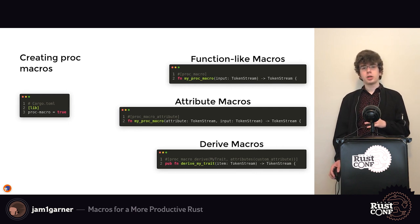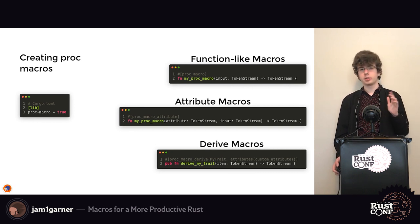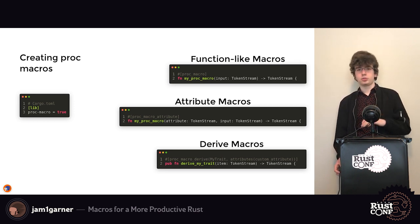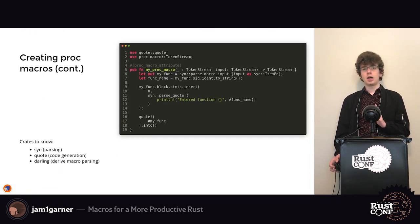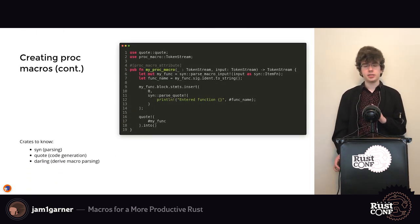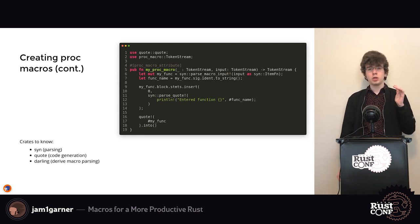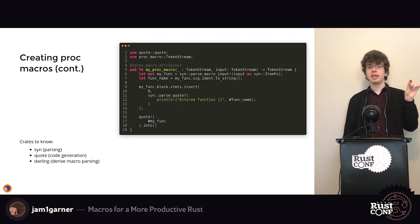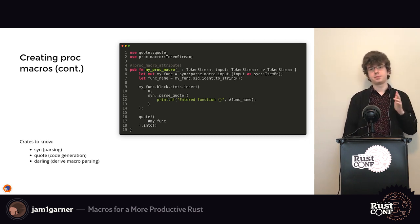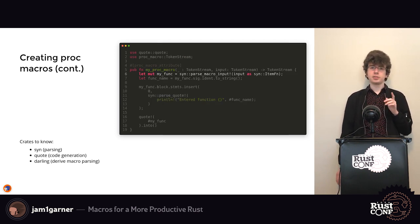To create a proc macro yourself, create a new library with `proc-macro = true` in your Cargo.toml, then write a function that takes a TokenStream and outputs a TokenStream. Here's an example attribute macro that you place at the top of a function — it inserts a print statement at the beginning of the function that prints "entering this function", allowing you to trace execution.